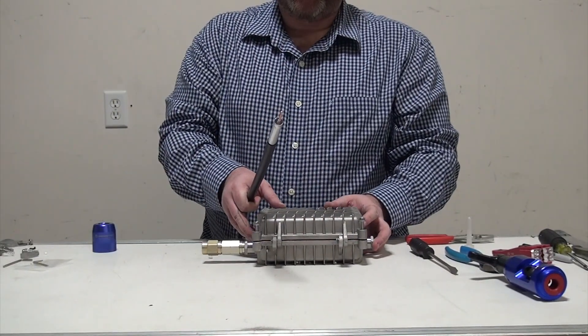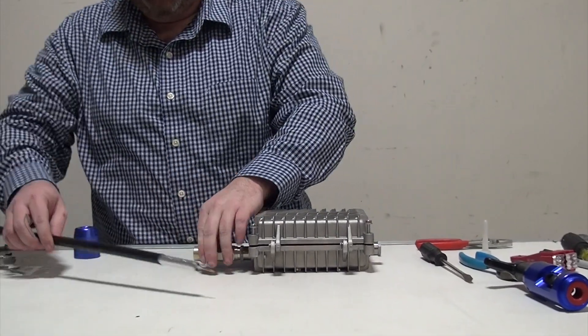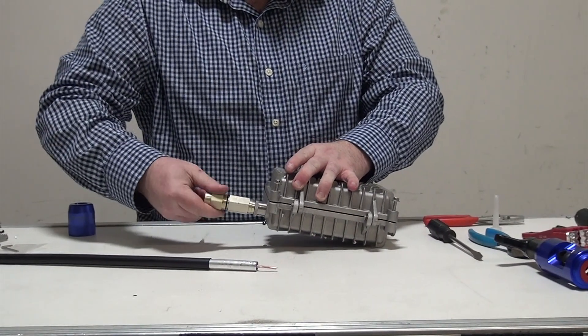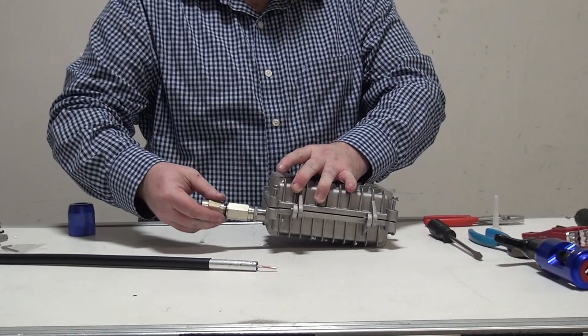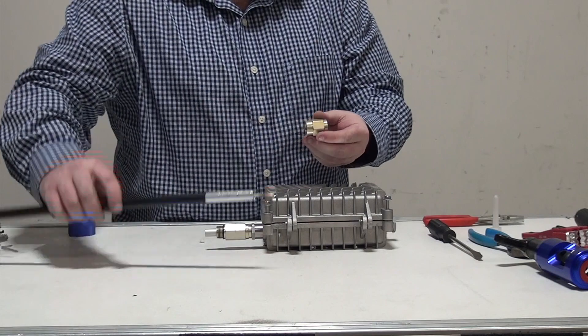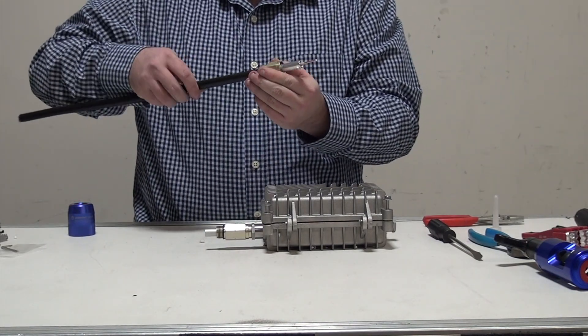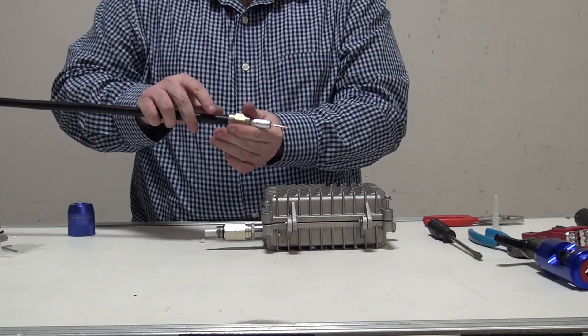With our cable properly prepped, we're going to remove the back nut of our T2 fitting here. We're going to slide this over our prepped cable all the way back until it meets the jacket.